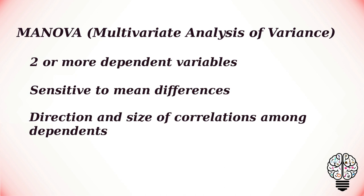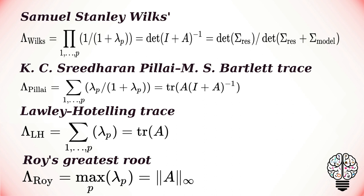Instead of using the F ratio or F value, we would use a multivariate F value. Some of the multivariate F values are calculated using these formulas. The first is Wilks' Lambda, the most commonly used statistic for overall significance. Next is the Pillai-Bartlett trace, followed by the Lawley-Hotelling trace. The last is Roy's Greatest Characteristic Root, which tests for differences on only the first discriminant function, while the other methods consider differences over all the characteristic roots.